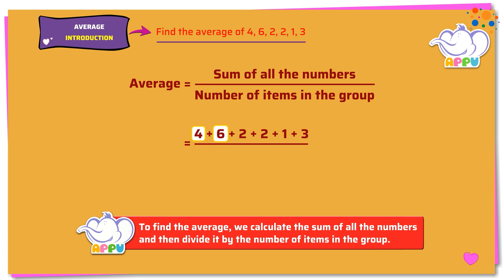1, 2, 3, 4, 5, and 6. We have 6 items. The sum is 18. This becomes 18 by 6, which is equal to 3. The average of the given values is 3.